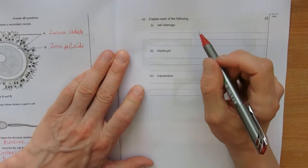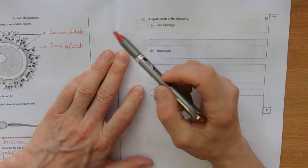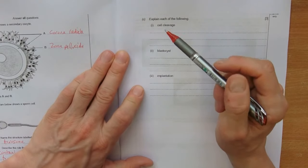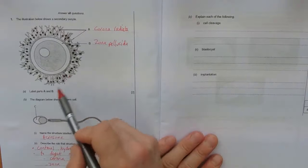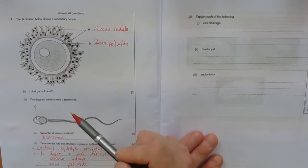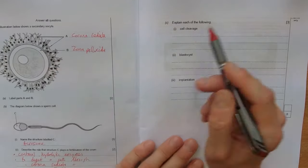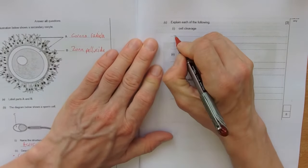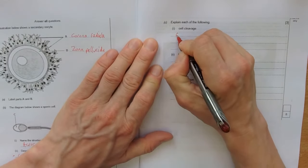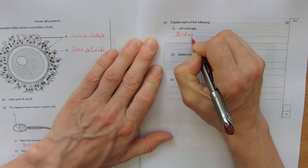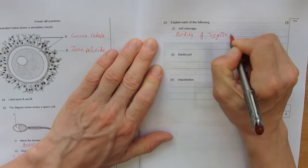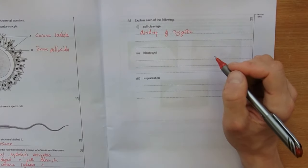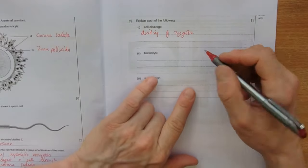And that is just the dividing of this zygote to form new cells. So after fertilization, we get a zygote. And then this divides and divides and divides. So dividing of the zygote. The mark scheme says early embryo, but try and use the right term zygote.